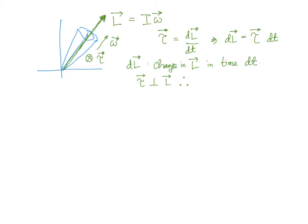Since the torque is perpendicular to L, the magnitude of L does not change — only its direction changes. The magnitude |L| is constant. At a certain time, this is the L vector, and as the torque acts, τ·dt equals dL.